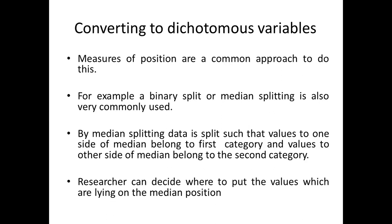When converting to dichotomous variables, measures of position are a common approach. For example, a binary split or median splitting is very commonly used. In median splitting, data is split such that values to one side of the median belong to the first category and values to the other side belong to the second category. The researcher can decide where to put values lying exactly on the median position. Measures of position specifically include percentiles, quartiles, and deciles.